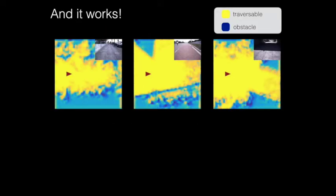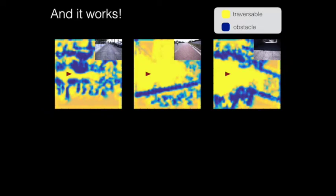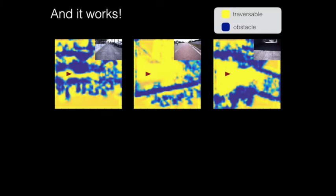As seen in the example cost maps, our model is able to learn where we can and cannot drive. Walls, cars, etc. seen in the images are marked as untraversable by our cost map. Some smaller artifacts, however, are visible in the middle example.